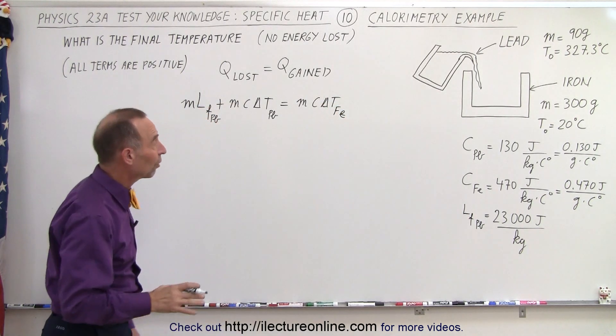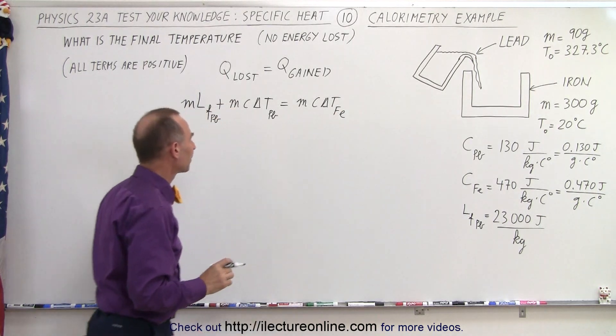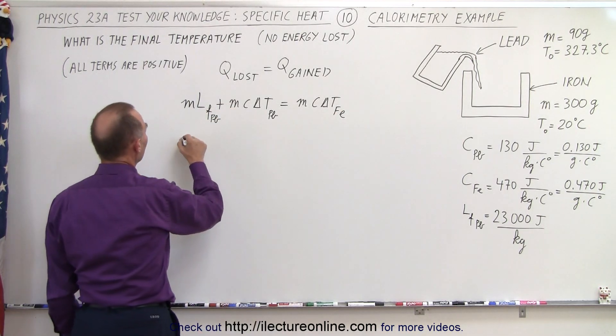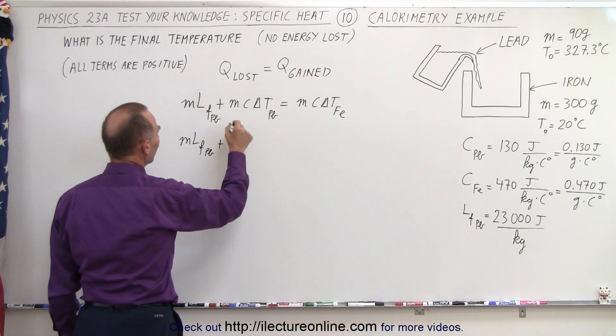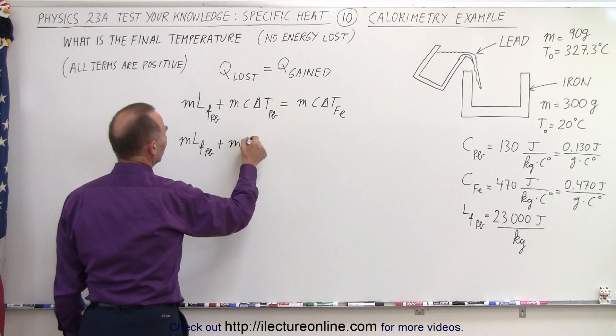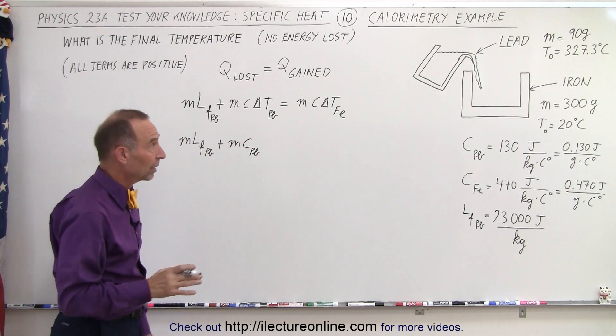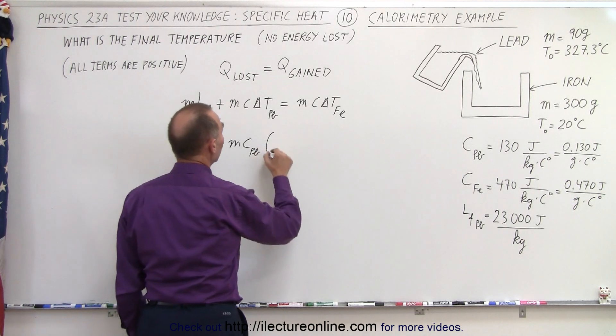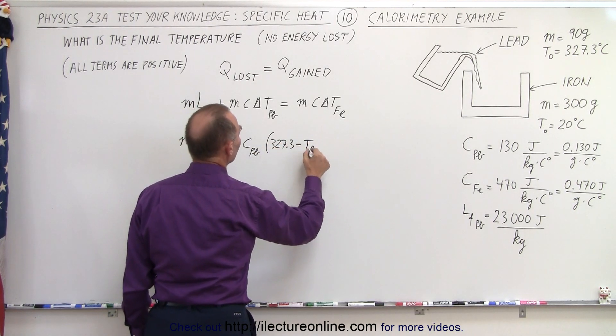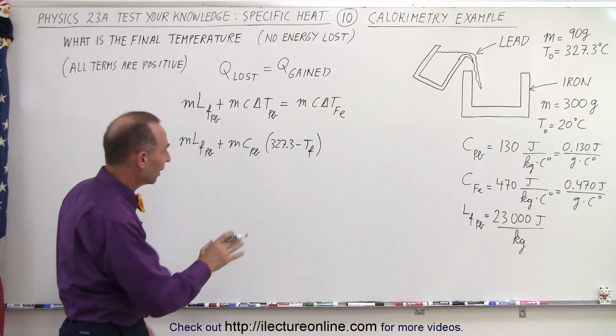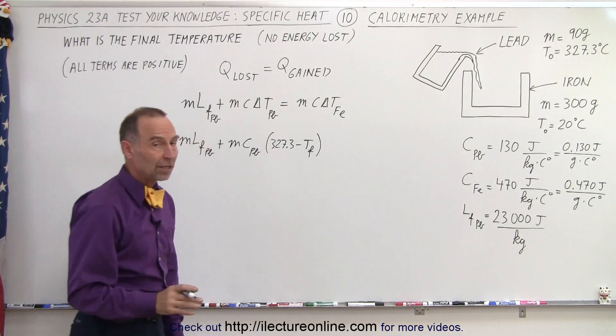So now let's put in some specifics. M times the latent heat of fusion for lead, that stays the same, plus the mass of the lead, times the specific heat of the lead, times the change in the temperature. Now it's going to start at 327.3, and end up with the final cooler temperature. So I'll write the initial minus the final temperature, because that gives me a positive quantity.